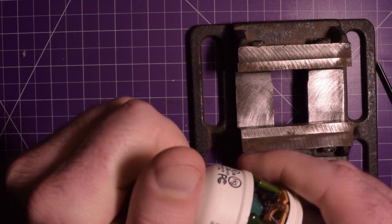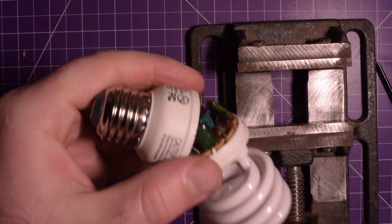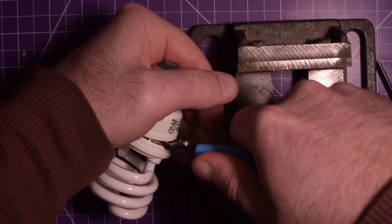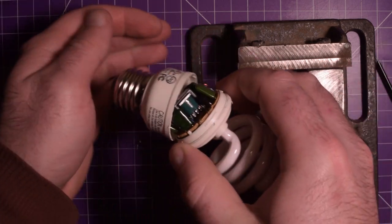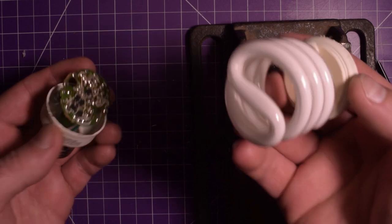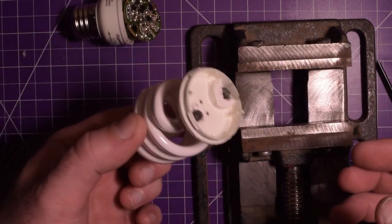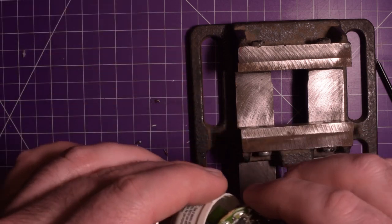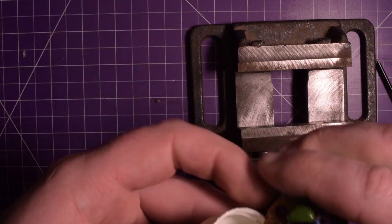There we go. It let go. Okay. I'm going to break this one off. This post. And there we go. So now we have the CFL. The tube part, which you can safely throw away. And then here, we have the internal portion.